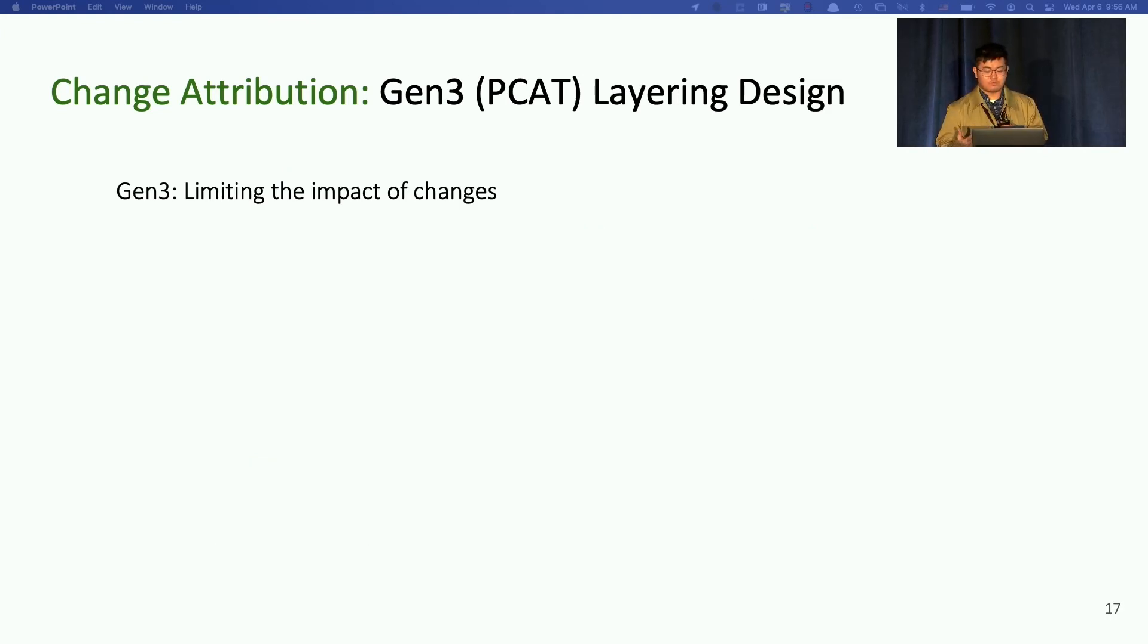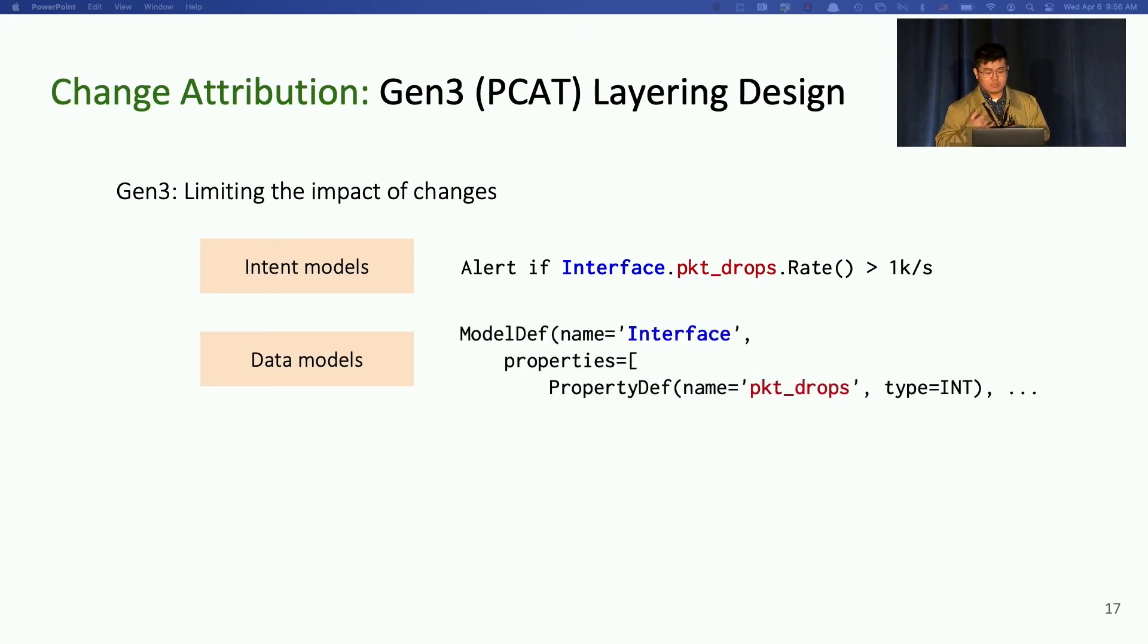So that's why in current Gen 3, which is PCAT, we try to separate the model further into different layers. We first separate the intent model, which are used by the application to specify their monitoring needs. For example, specific alerting rules about packet drops. Then we separate the data model, which describes the high-level collected data structures and meanings, like the package drop field in the interface data model. The application only needs to focus on their monitoring needs or monitoring intents, and high-level data models, not worrying about vendor data format or collection methods.